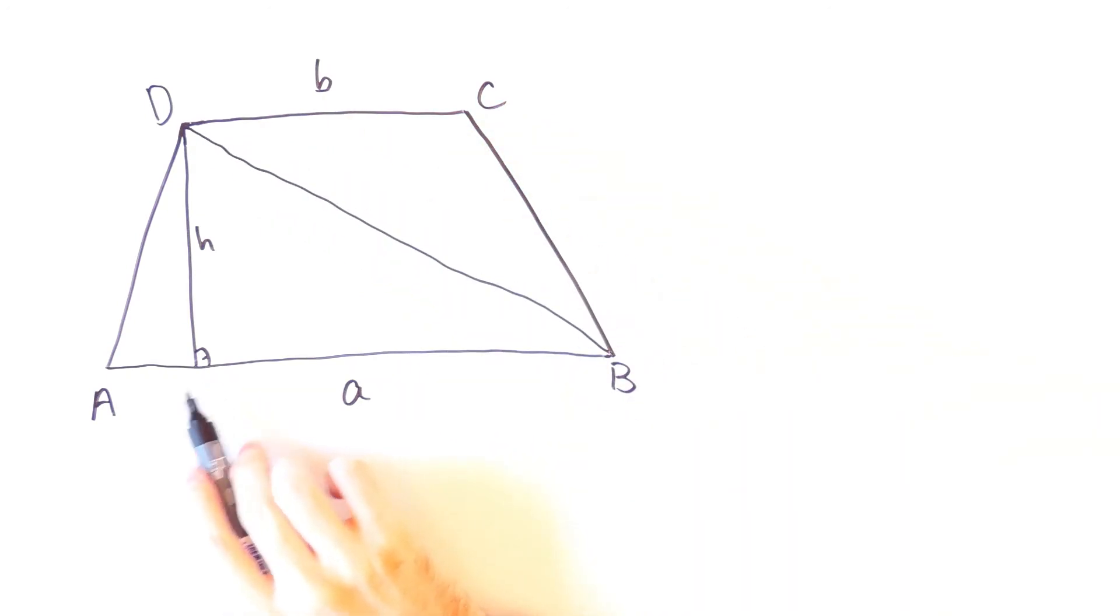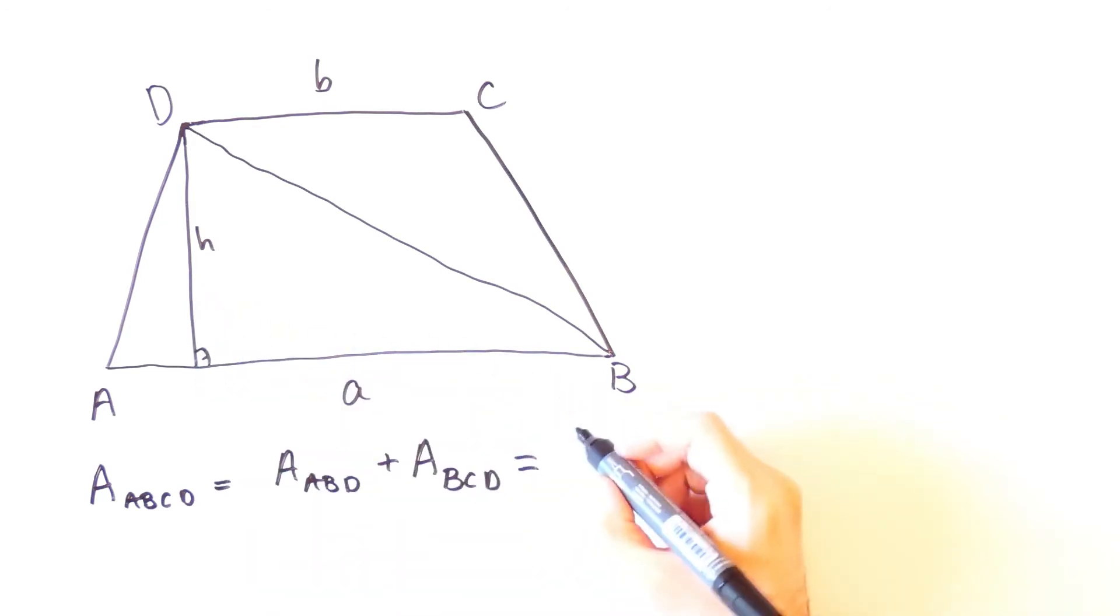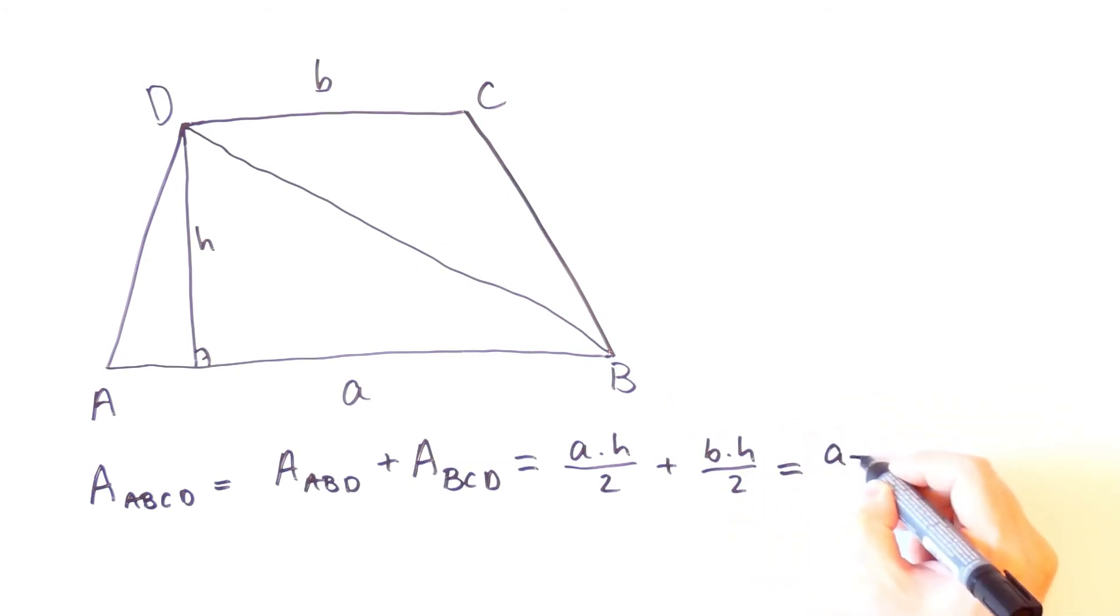The area of the trapezium ABCD is equal to the area of the triangle ABD plus the area of the triangle BCD. And that is equal to A times H over 2 plus B times H over 2 which is equal to A plus B over 2 times H.